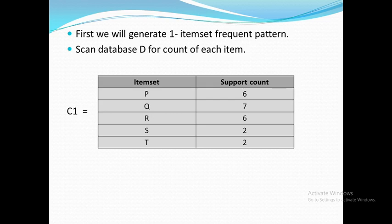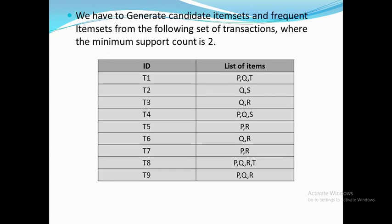P has a support count of 6. How is it calculated? For that we check our transaction table. Item P occurs at transactions T1, T4, T5, T7, T8, and T9.